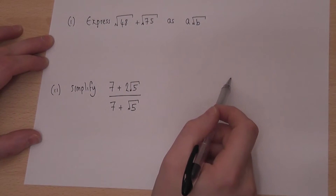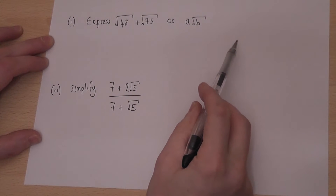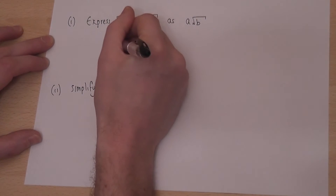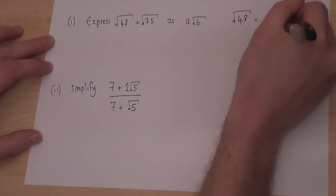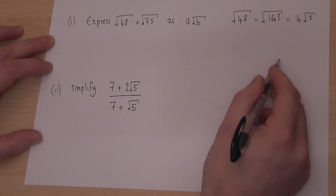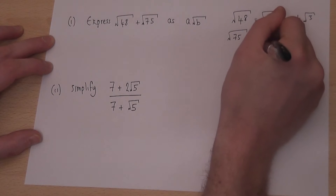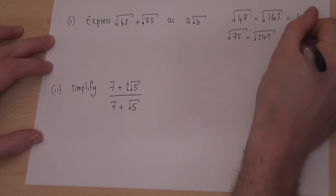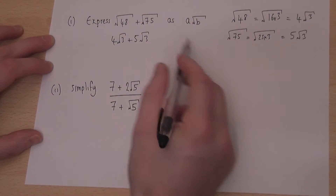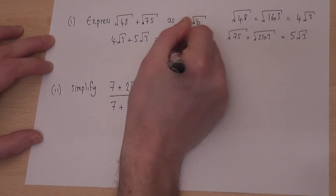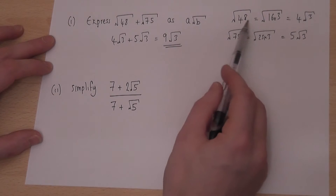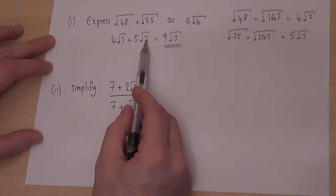This section looks at adding two surds where the number inside the square root is different. The method is to first simplify the surds. Root 48 has a square factor of 16, so it's 4 root 3. Root 75 has a square factor of 25, so it's 5 root 3. The question then becomes 4 root 3 plus 5 root 3: 4 plus 5 is 9, so the answer is 9 root 3, meaning A is 9 and B is 3. When adding surds, simplify first so you can match the radicands.